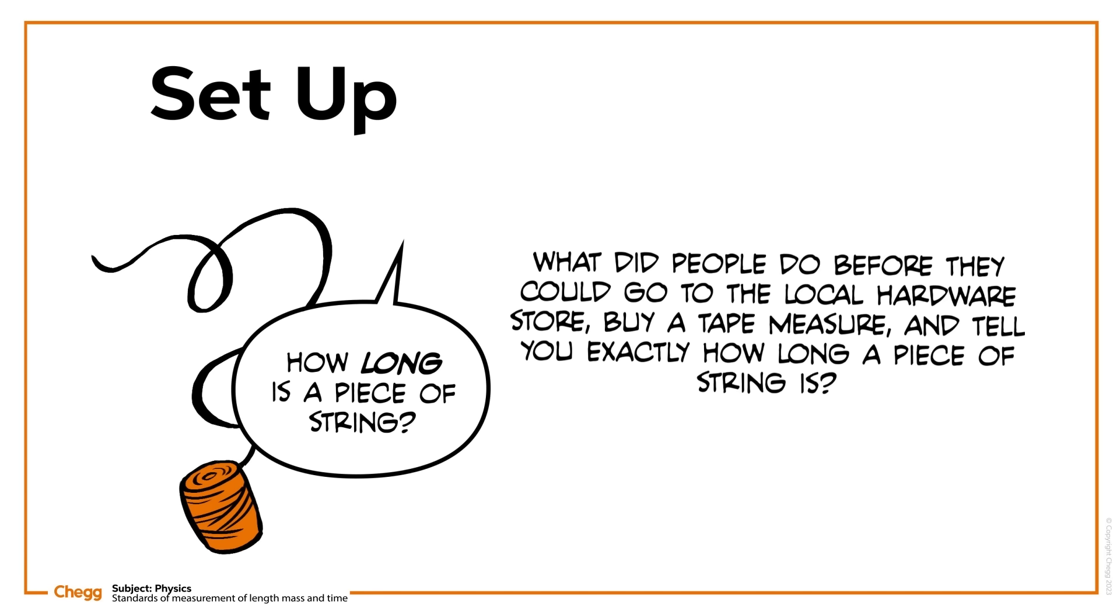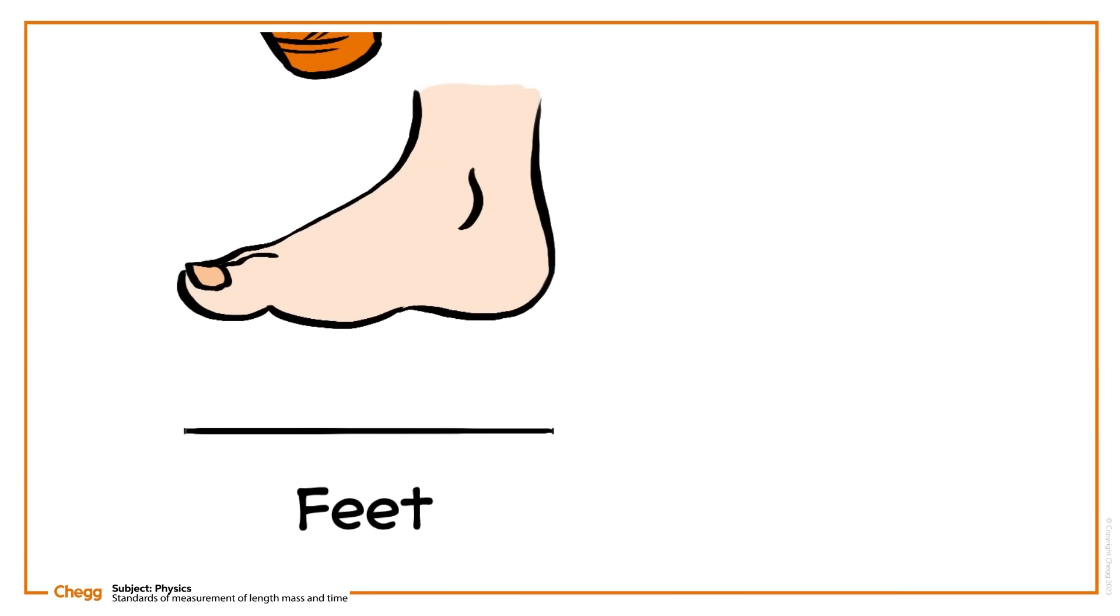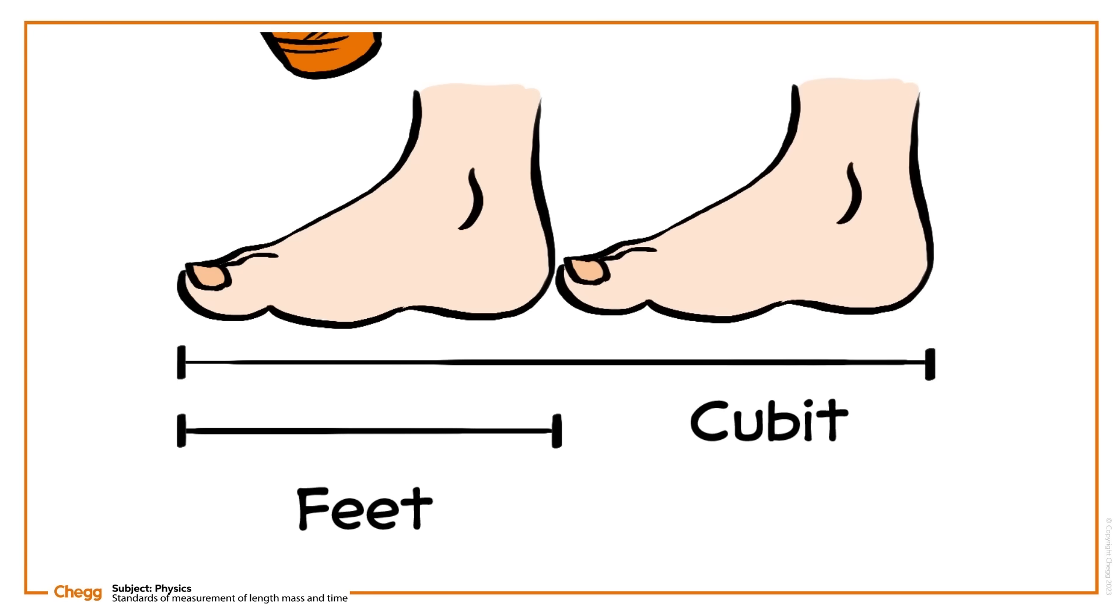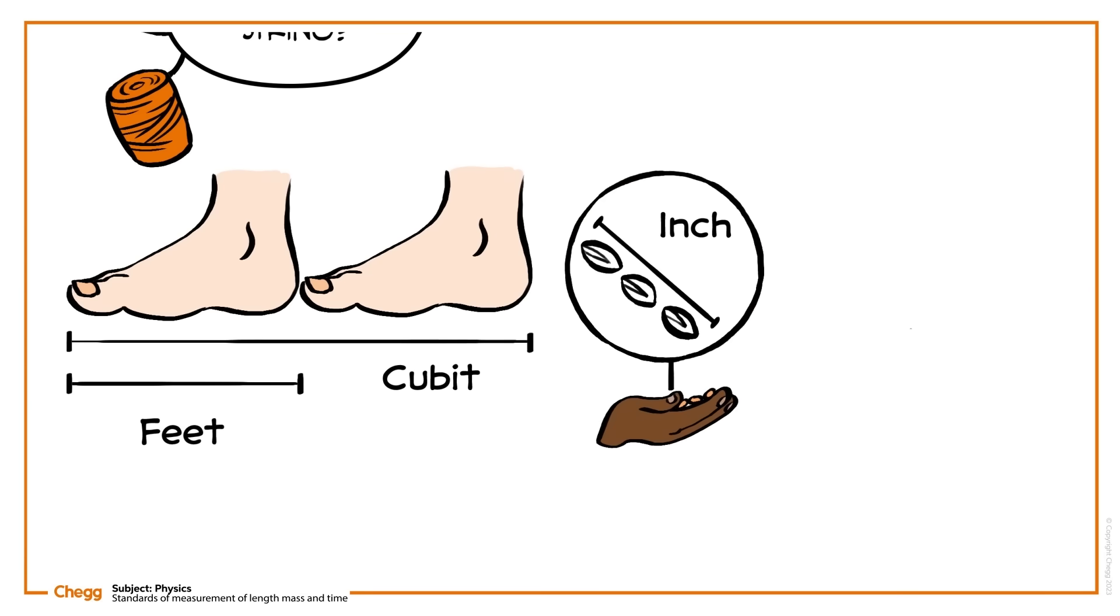The truth, perhaps amusingly, is that they simply had to have a piece of string. Until quite recently, things were measured in vague terms, like feet, the measure of an average adult's foot, a cubit, two feet, an inch, three barleycorns, or an acre, the area of a field that could be plowed in one day.